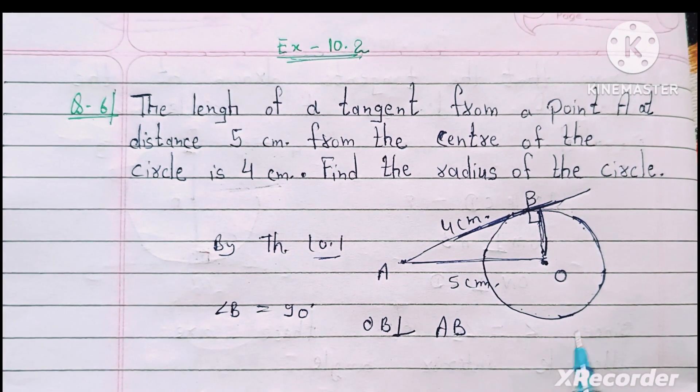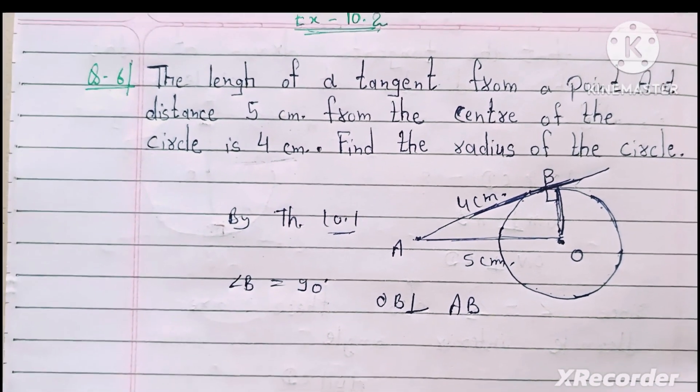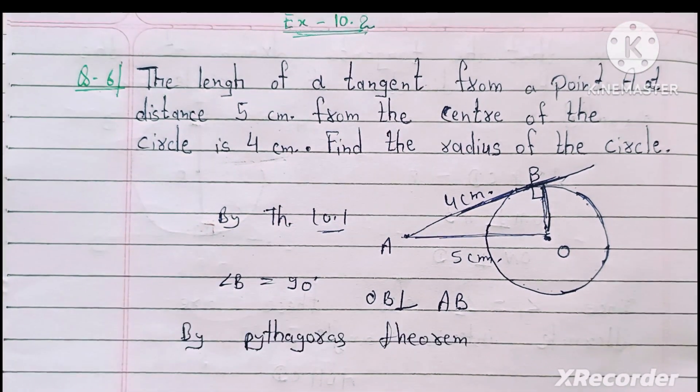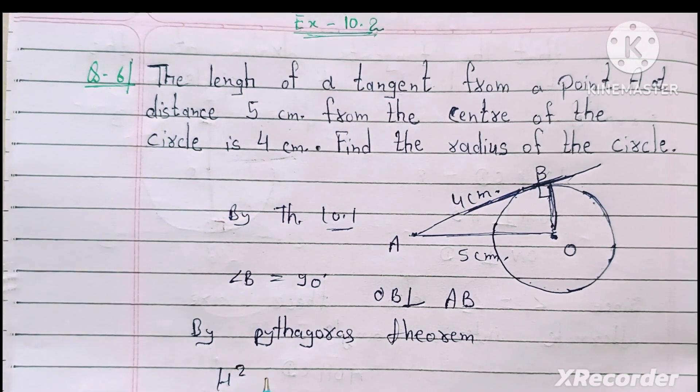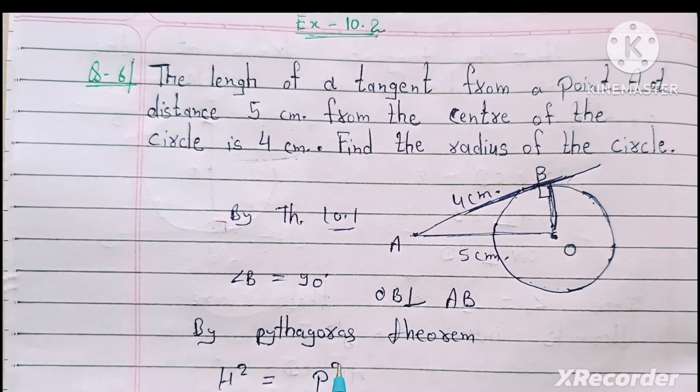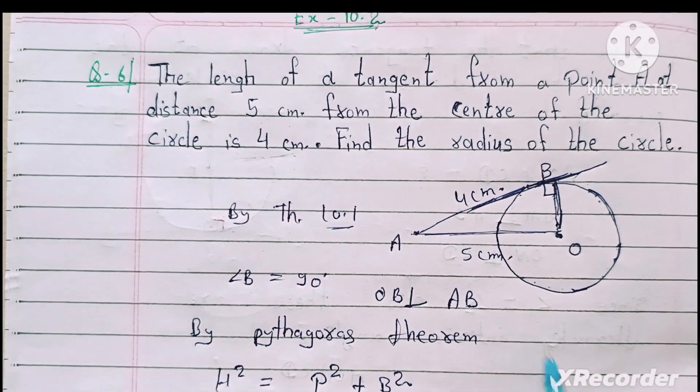Yeh ek right triangle ban raha hai to isme le lenge Pythagoras theorem. Pythagoras theorem hoti hai: hypotenuse square is equal to perpendicular square plus base square.